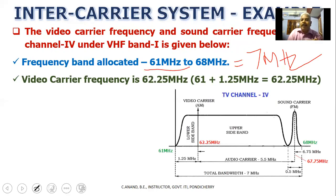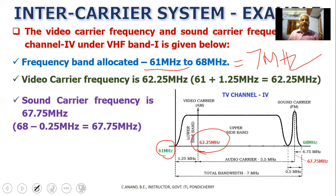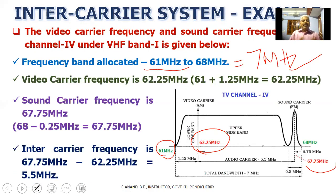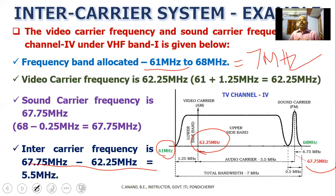For Channel 4, the video carrier frequency is fixed 1.25 MHz above the lower frequency: 61 + 1.25 = 62.25 MHz. The sound carrier is placed 0.25 MHz below the upper frequency: 68 − 0.25 = 67.75 MHz. The distance between the sound and video carriers: 67.75 minus 62.25 equals 5.5 MHz — confirming the intercarrier frequency match.